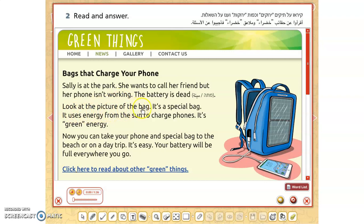Next. Look at a picture of the bag. It's a special bag. Special, למדו את זה בפרק הקודם, מיוחד. It uses energy from the sun to charge phones. It's green energy. זאת אומרת, the bag is special, and why? It uses energy, הוא משתמש באנרגיה, to capture the sun's rays and convert to solar energy, to charge phones.